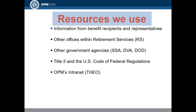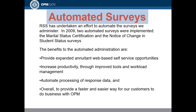Resources we use include information from benefit recipients and representatives, other offices within retirement services, other government agencies, Title V and the U.S. Code of Federal Regulations, and OPM's intranet. We have undertaken an effort to automate the surveys we administer. In 2009, two automated surveys were implemented: the marital status certification and the notice of change in student status surveys. The benefits of automated administration include expanded annuitant web-based self-service opportunities, increased productivity through improved tools and workload management, automated processing of response data, and overall a faster and easier way for customers to do business with OPM.